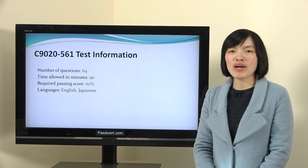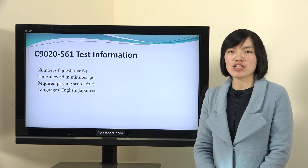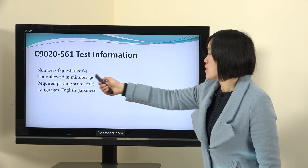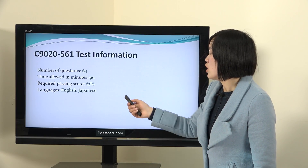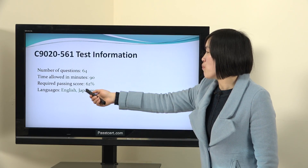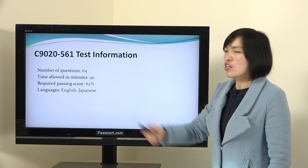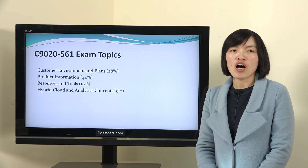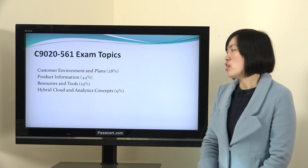Let's view the real test information first. In the real C9020-561 exam, there are 64 questions and you have 90 minutes to complete the test. The required passing score is 62%. The test languages are English and Japanese.